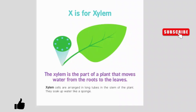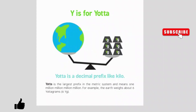X is for xylem. The xylem is part of a plant that moves water from the roots to the leaves. Xylem cells are arranged in long tubes in the stem of the plant. They soak up water like a sponge.